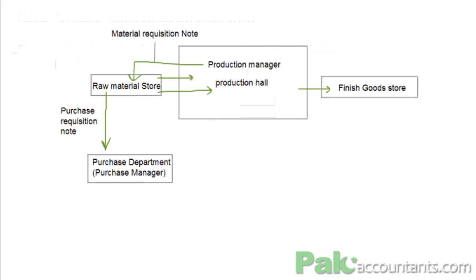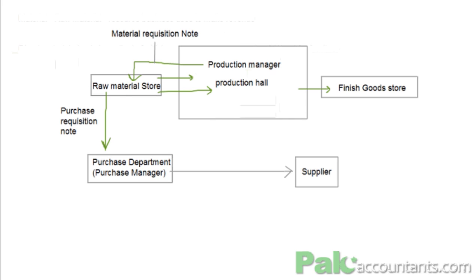Once the purchase manager satisfies himself that everything is in order and stock is genuinely needed, he will send a Purchase Order to the supplier. A Purchase Order is a document sent to the supplier instructing them that we need a specified number of units by a specified date, at the agreed rate quoted by the supplier.